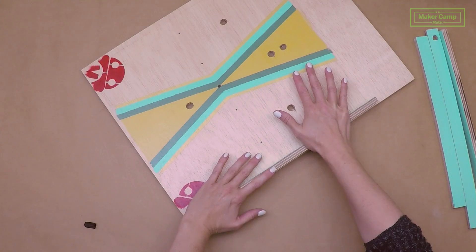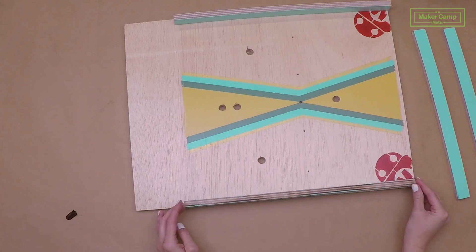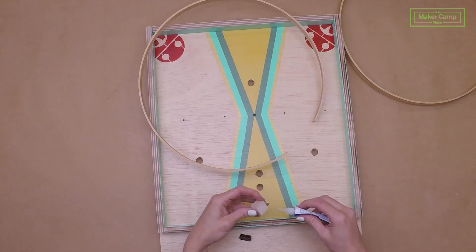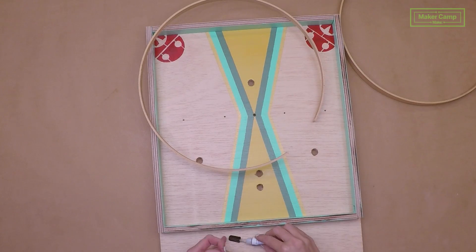First, we're going to glue down our wood trim to the top of the play board. Add a little scrap of wood to the bottom. It probably shouldn't be any taller than one inch.